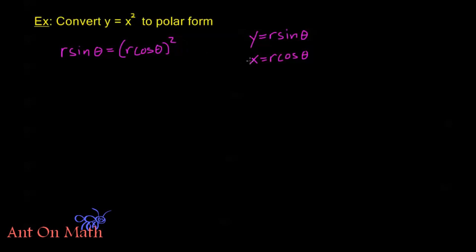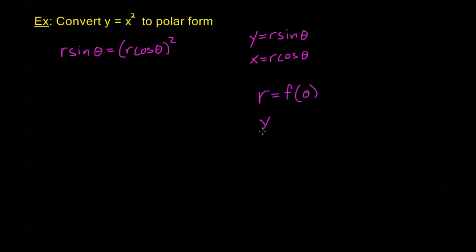Before we move on, I want to make something clear: when writing the polar form of an equation, our goal is to get to r equals f of theta. This is analogous to rectangular coordinates where we usually have y equals f of x. As we change theta, we want to easily read off r — the same way we read off y for any given x when graphing in rectangular form.